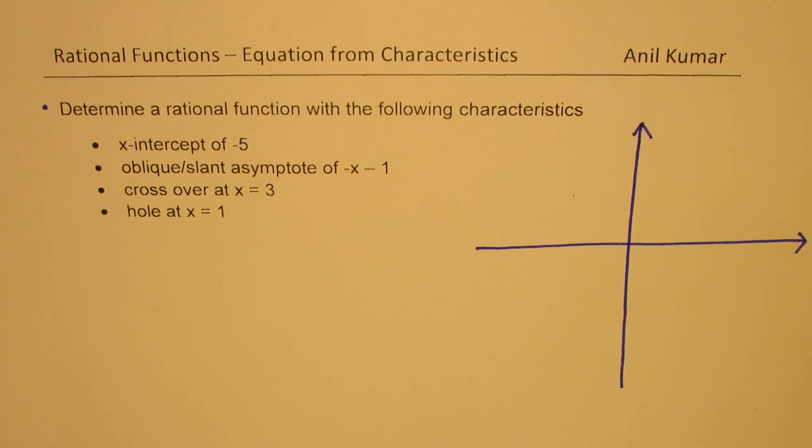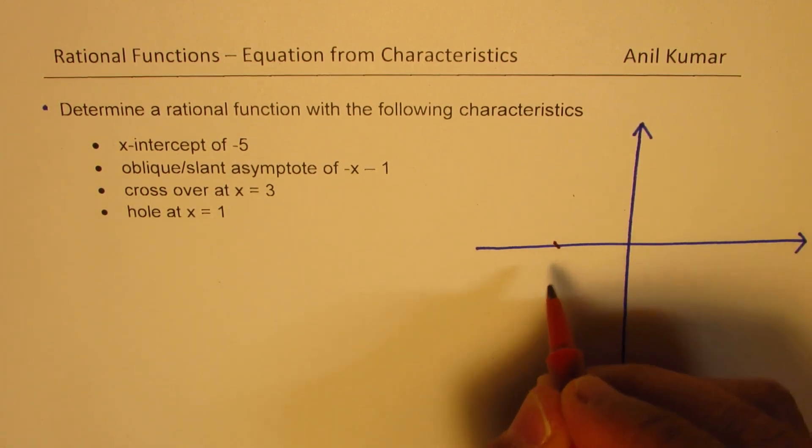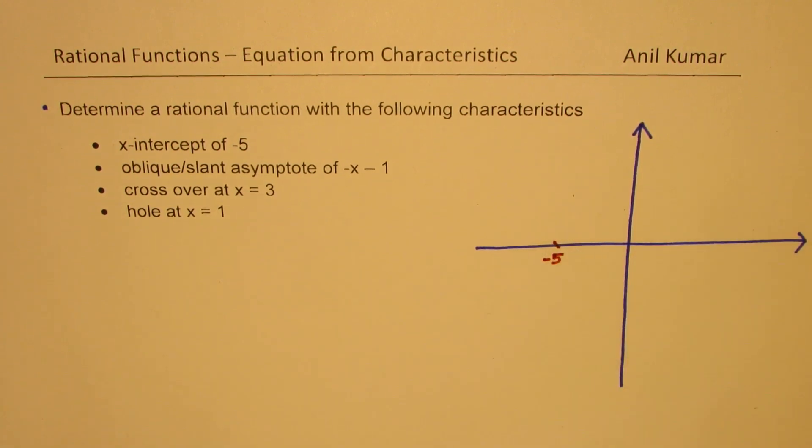So one of the things we mentioned here is the x-intercept of minus 5. That means somewhere here, the graph is to cross the x-axis.